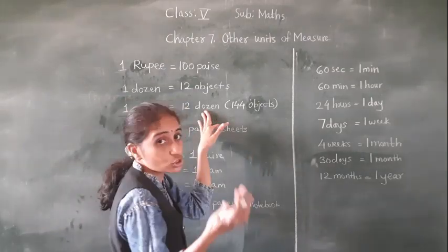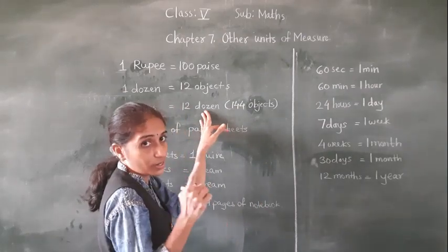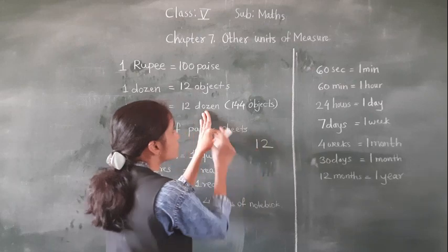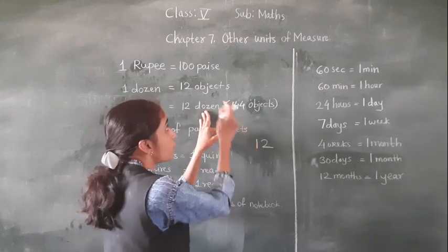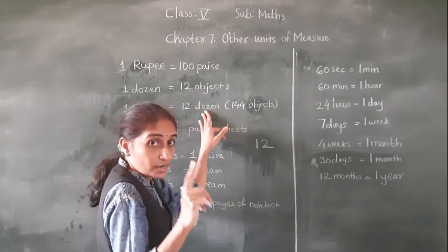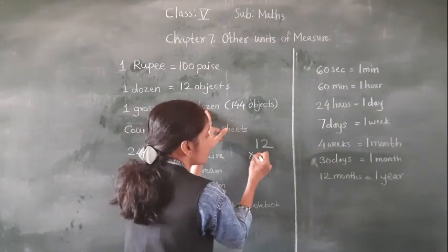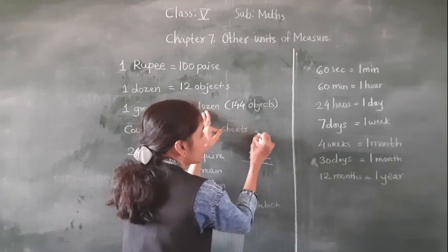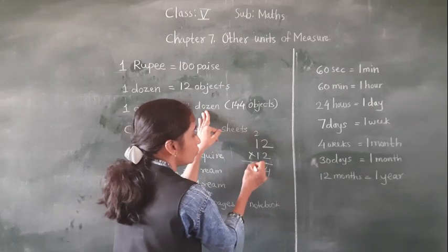In 1 dozen how many objects do we get? 12 objects. So in 12 dozen how many objects do we get? See: 12 dozen. In 1 dozen, 12 objects. Then in 12 dozen: 12 twos are 24, 12 ones are 12, so that gives us 144 objects.